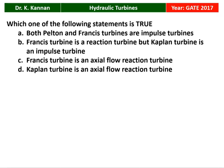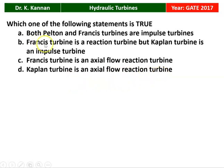The next question from the 2017 question paper: Which one of the following statements is true? Four statements are given: both Pelton and Francis turbine are impulse turbines; Francis turbine is a reaction turbine but Kaplan turbine is an impulse turbine; Francis turbine is an axial flow reaction turbine; Kaplan turbine is an axial flow reaction turbine. Among the 4 statements, option D is the correct answer — Kaplan turbine is an axial flow reaction turbine. The other options are not correct.